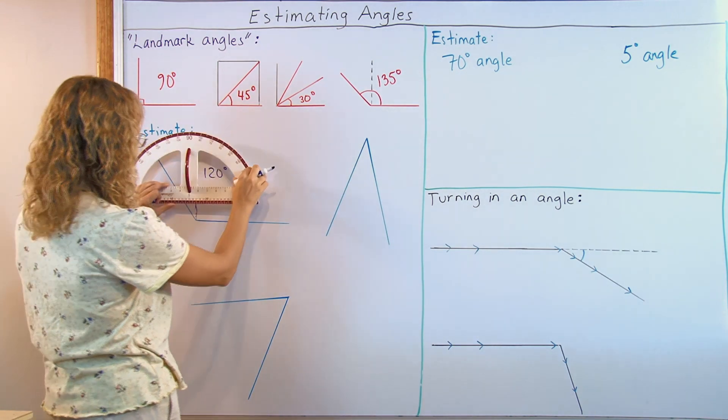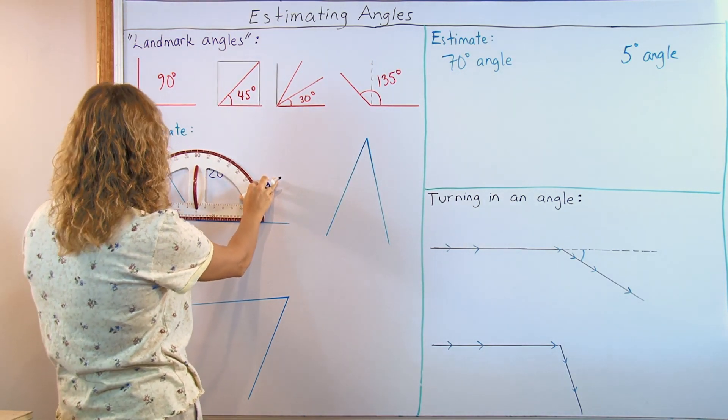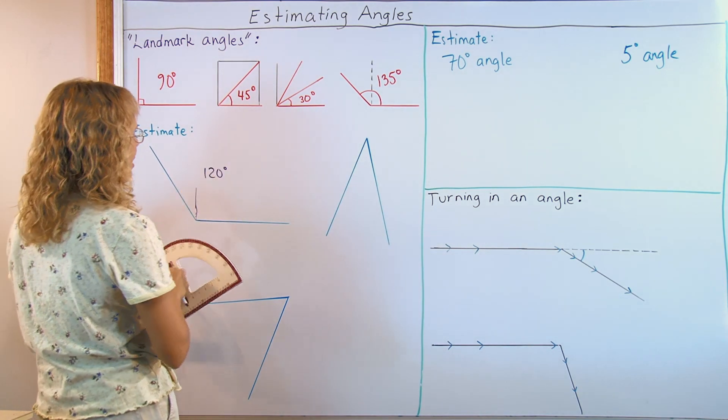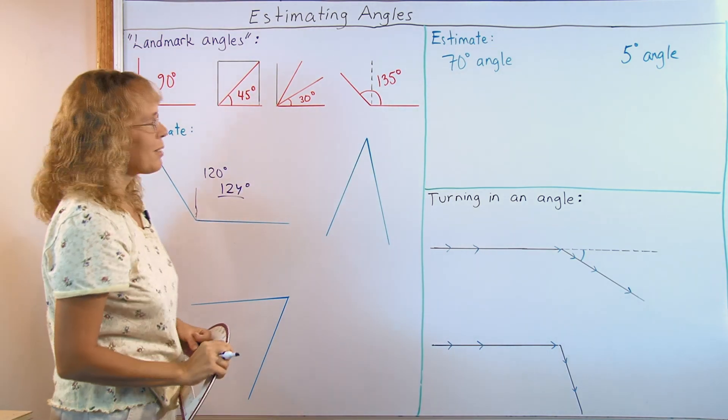This is truly, I am estimating. Here's my protractor. Here's 120. It's past that. It's 124 in reality. But pretty close, right?